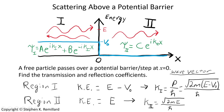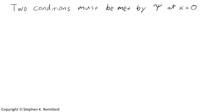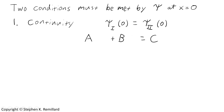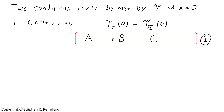Let's proceed to find expressions for these coefficients. There are two conditions that have to be met by the wave function at the interface. The first is continuity: it has to have the same value just before the interface as just after. Writing out the two wave functions at x equals zero, e to the ik times zero equals one, so the continuity condition gives a plus b equals c. We will call that equation one.